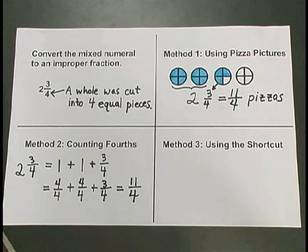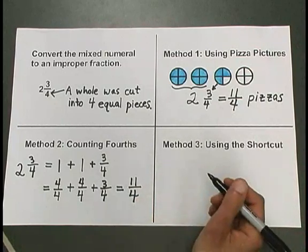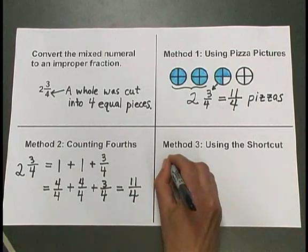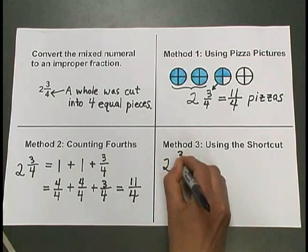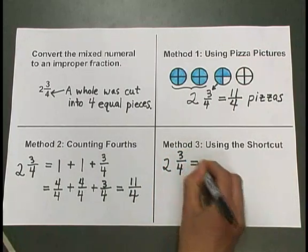So in method 3, we're going to talk about using a shortcut to convert 2 and 3 fourths to an improper fraction.